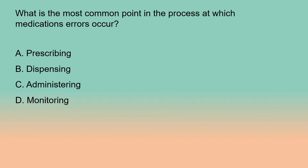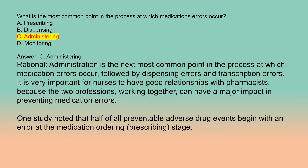What is the most common point in the process at which medication errors occur? A. Prescribing. B. Dispensing. C. Administering. D. Monitoring. Answer: C. Administering. Rationale: Administration is the most common point at which medication errors occur, followed by dispensing errors and transcription errors. Nurses and pharmacists working together can have a major impact in preventing medication errors. One study noted that half of all preventable adverse drug events begin with an error at the medication ordering stage.